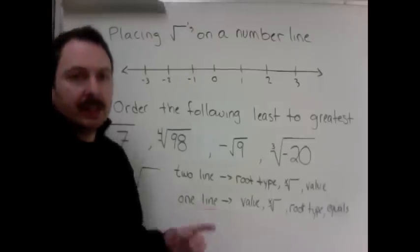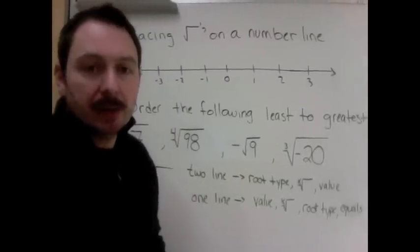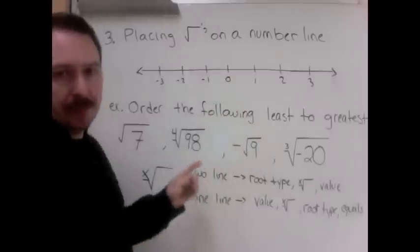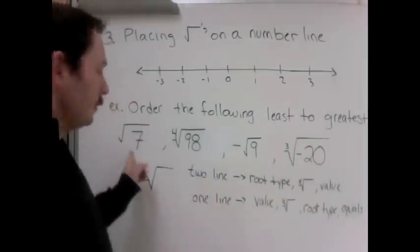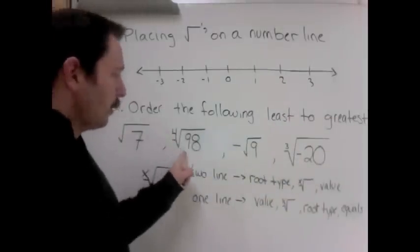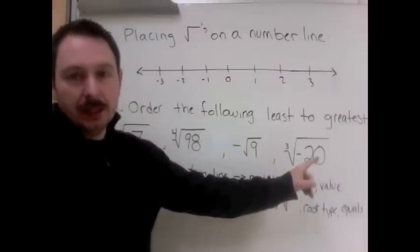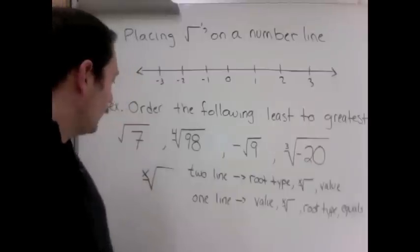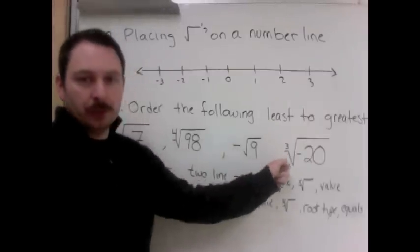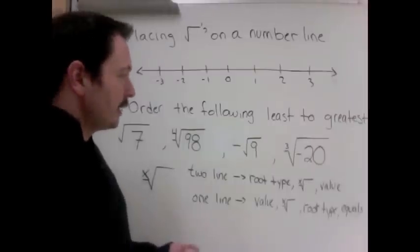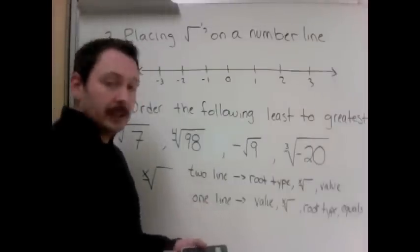Last thing we're looking at today, or number 3 on our learning intentions, was how to place numbers on a number line. In order to do this, the question will read something like order the following least to greatest or smallest to largest. So we have the square root of 7, the fourth root of 98, negative square root of 9, and the cube root of negative 20. With this, you need to know how your calculator works in order to do fourth roots or cube roots. You could use the estimation techniques we used at the start or you can use your calculator here.